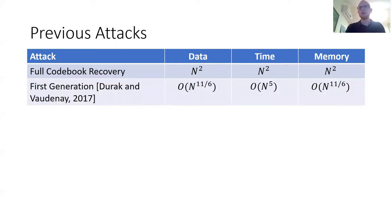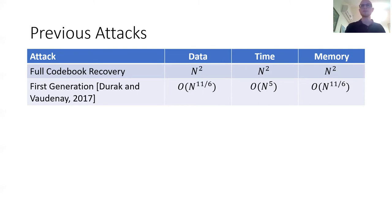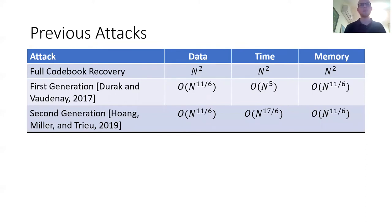The first attack that was an improvement over this was an attack by Dirac and Vaudenay in 2017 that improved the data requirements, meaning that we no longer need to query the entire domain, at a significant increased time of N to the power of 5 — although as we said earlier, these times are practical since FF3 works over low domains. The second generation attack by Hoang, Miller, and Tru in 2019 preserved these data and memory requirements while significantly reducing time below N to the power of 3.